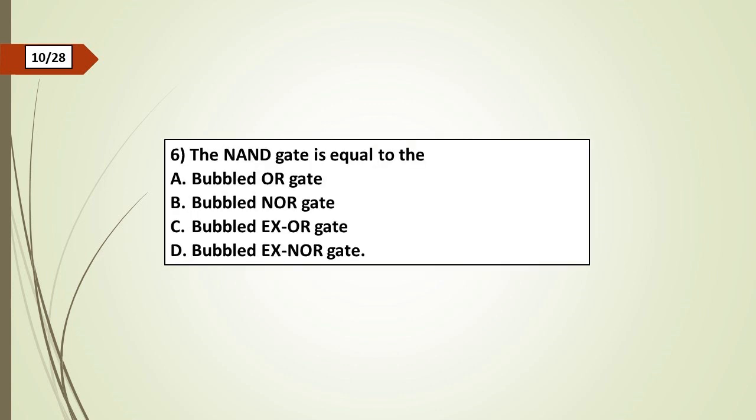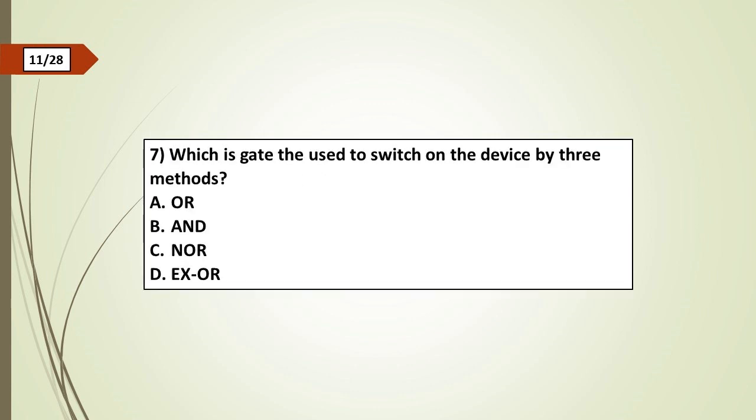Sixth question: The NAND gate is equal to: a) bubbled OR gate, b) bubbled NOR gate, c) bubbled XOR gate, d) bubbled XNOR gate. Seventh question: Which is the gate used to switch on the device by three methods? a) OR, b) AND, c) NOR, d) XOR.